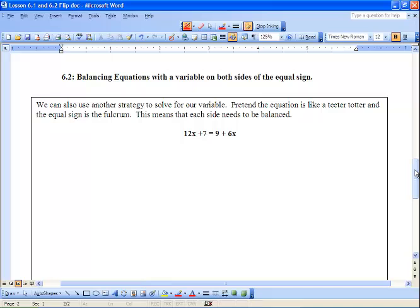We're going to balance equations with a variable on both sides of the equal sign. You can use another strategy to solve for our variable. Pretend that the equation is like a teeter-totter and the equal sign is the fulcrum. This means that each side has to be balanced.